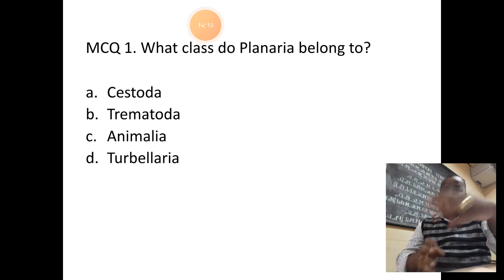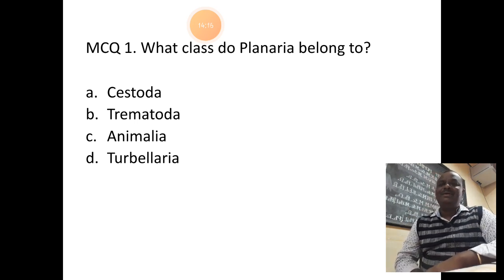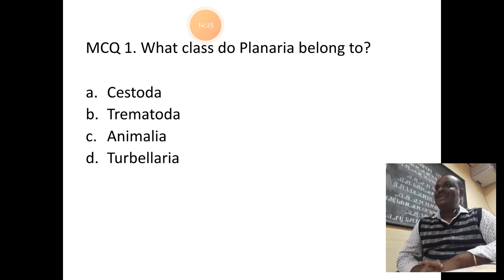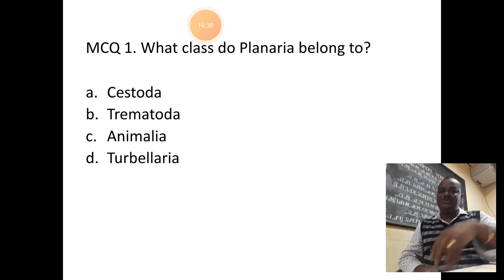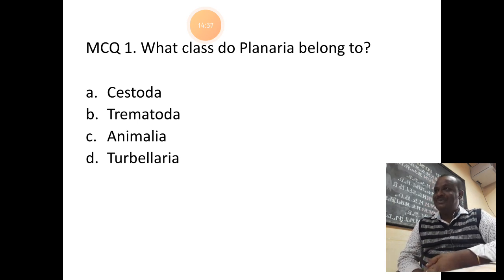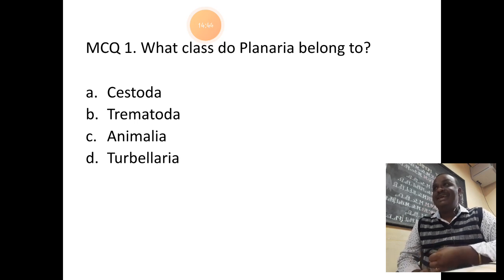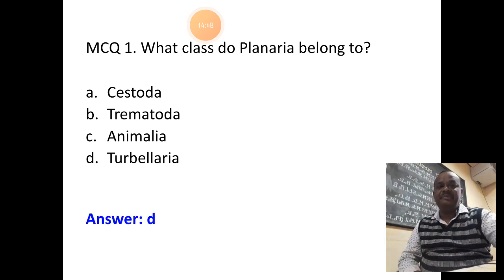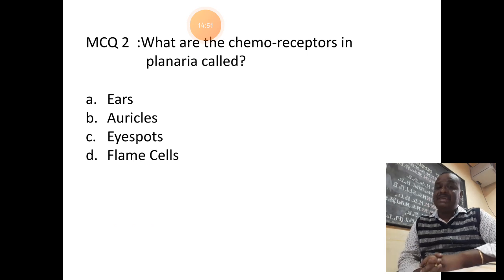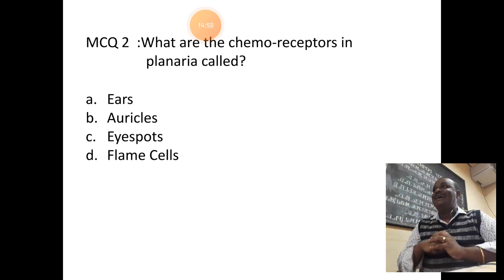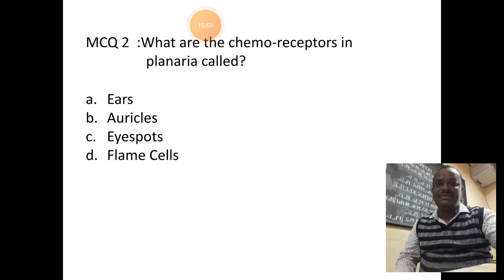To test our understanding, here are a few MCQs. First: to what class do planaria belong? Planaria belongs to phylum Platyhelminthes and class Turbellaria — the answer is Turbellaria. Second: what are the chemoreceptors present in planaria called? They are present in the auricles — the answer is auricles.